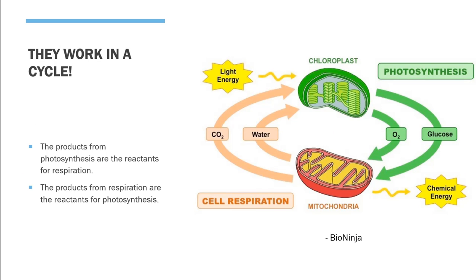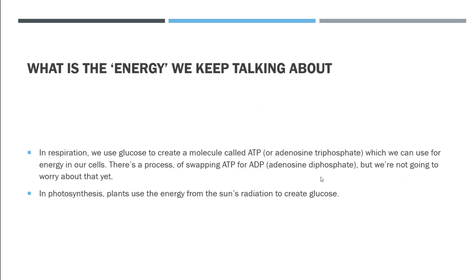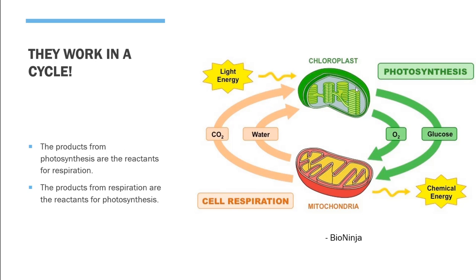What we're getting at is that they work in a cycle. The products from respiration are the reactants for photosynthesis, and the products from photosynthesis are the reactants for respiration. So it just goes in this cycle — humans are doing respiration, plants are doing photosynthesis. If we can manage to keep this cycle in balance, that's a really, really good thing. So they work in a cycle — that's the big takeaway. We have these things working at the same time, and ideally we'd keep them balanced, but sometimes the balance shifts.